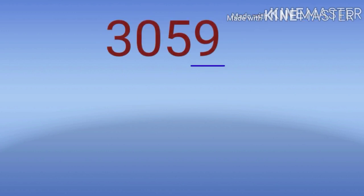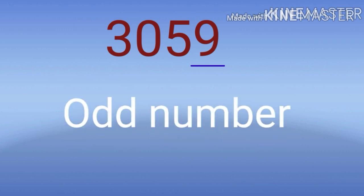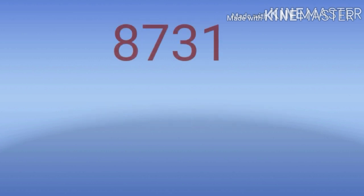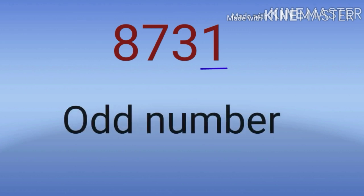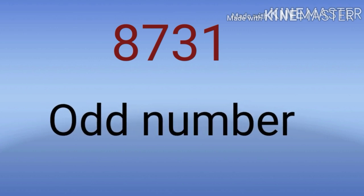For example, 359. Here the ones place is 9, so we can say that 3059 is an example for odd number. Next example, 8731. Here the ones place is 1, so we can say that 8731 is an example for odd number.